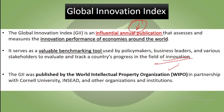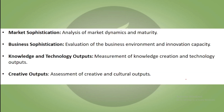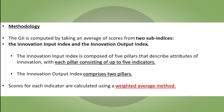The Global Innovation Index has several key indicators. It includes institutions — the evaluation of governance and regulatory structures — then human capital and research, covering education and research capabilities. It also looks at infrastructure — basic physical and digital infrastructure — market dynamics and market maturity, business environment, and innovation capacity. Knowledge and technology outputs as well as creative and cultural outputs are also measured.